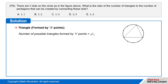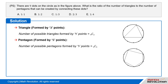A triangle can be formed by any three points, so the number of possible triangles created from the nine points shown in the figure above is 9 choose 3. A pentagon can be formed by any five points, so the number of pentagons that can be made from the nine points shown in the figure above is 9 choose 5.